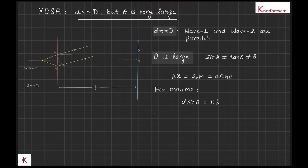And for positions of minimas, d sine theta will be equal to n plus half lambda, where n is equal to 0, 1, 2, 3, and so on. Since maximum value of theta is 90 degrees, or sine theta is 1...